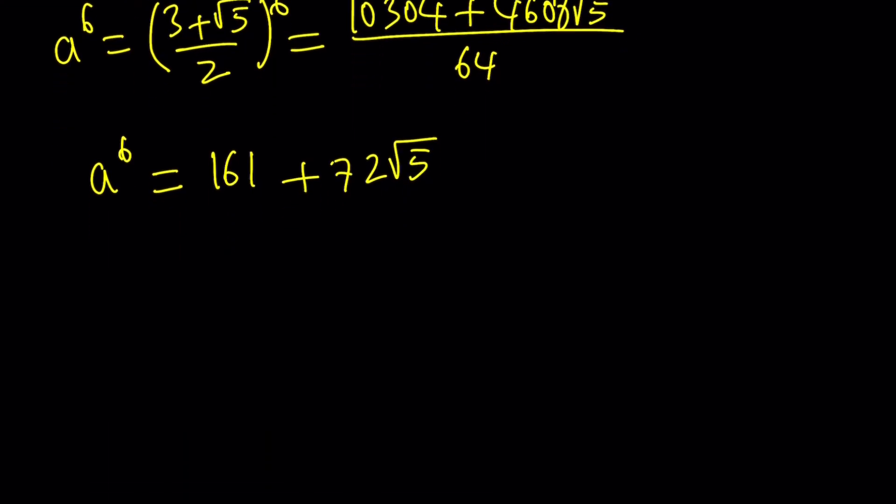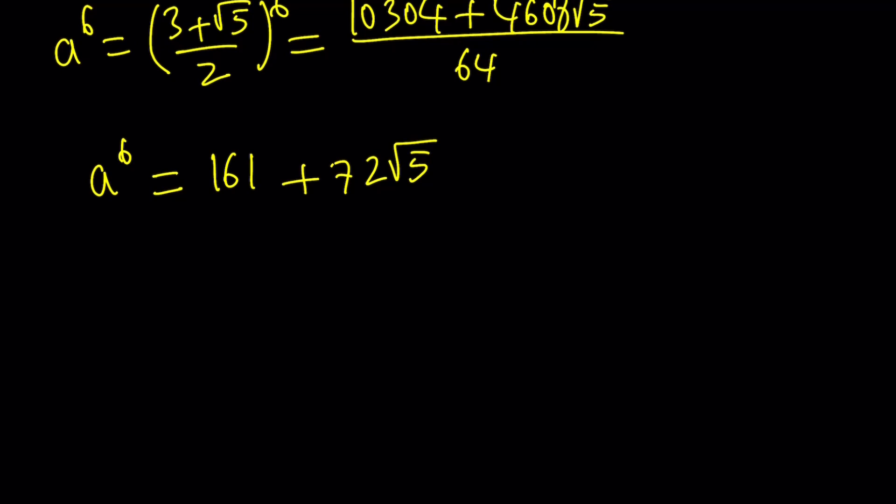So this is a to the 6th power. Now, what is 1 over a to the 6th power? If a is equal to 3 plus root 5 over 2, then 1 over a, the reciprocal of this expression, is going to be 3 minus root 5 over 2. Wait a minute, isn't that the conjugate? Yes. a and 1 over a are conjugates and also reciprocals. Why? Because if you multiply them, you get 9 minus 5 divided by 4, which is 4 over 4, which is 1. Now, if the product of two numbers is 1, then they are reciprocals.